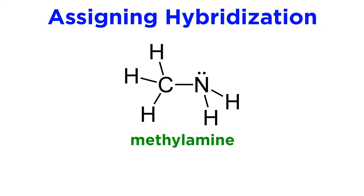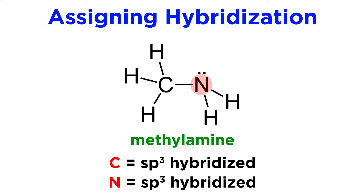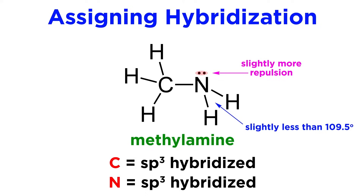Methylamine is just ammonia with a methyl group. We already know that the carbon atom is sp3 hybridized, as it has four bonds to four other atoms. We can also look at the nitrogen atom and see that it is sp3 hybridized as well, since it also has four electron domains. It makes three bonds to hydrogen or carbon atoms, and then it has a lone pair, which is the fourth electron domain. The lone pair offers slightly more repulsion than a bonding electron pair, so this HNH bond angle will be slightly contracted from the typical 109.5 degrees.